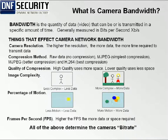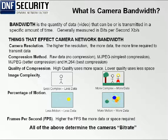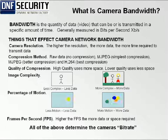All of the above — resolution, compression method, quality of compression, complexity, motion, and frames per second — determines a camera's bit rate. In a lot of camera calculators, that's strictly the field that's used. You can mathematically take the bit rate and calculate how much space is required, how much capacity or data you're going to move to the NVR, and then subsequently the storage.